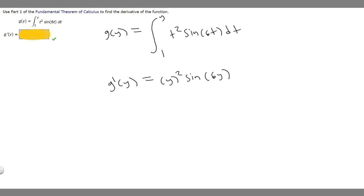And since we have the bound, since we have this upper bound, we've got to multiply by the derivative of the bound too because it's like the chain rule. So yeah, the answer to this problem is going to be y squared times the sine of 6y.